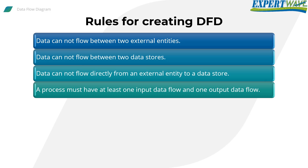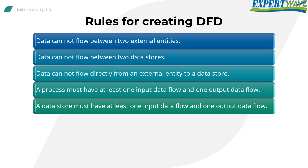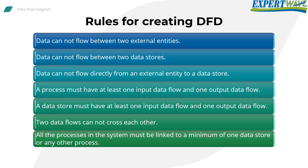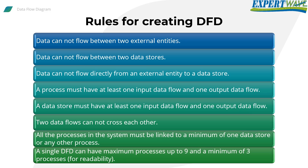A process must have at least one input data flow and one output data flow. A data store must have at least one input data flow and one output data flow. Two data flows cannot cross each other. All processes in the system must be linked to a minimum of one data store or any other process. A single DFD can have a maximum of nine processes and a minimum of three, mainly for readability purposes.